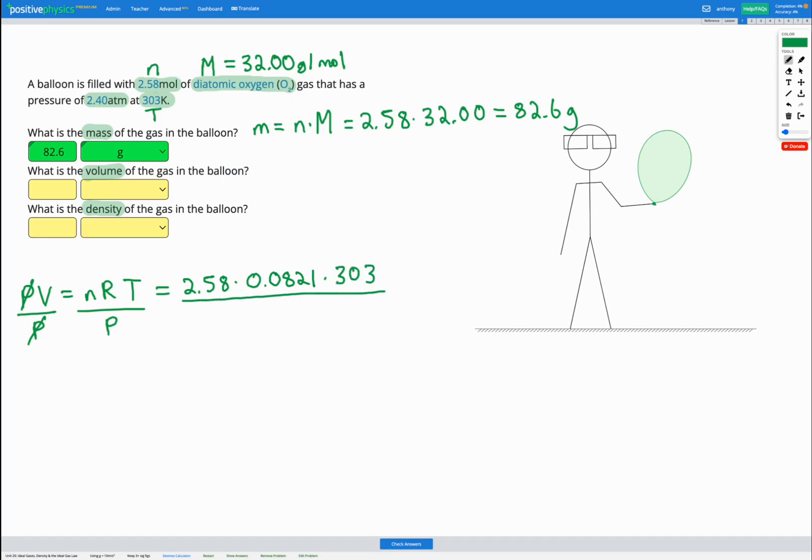And finally, divided by our pressure, which we're given in the question here, is 2.40 atm. So here we're just using our ideal gas equation. If we calculate that out in our calculator, that's going to give us a volume of 26.7 liters. So let's fill that out and check we got it correct. Awesome.